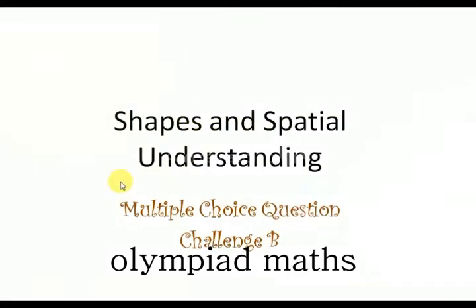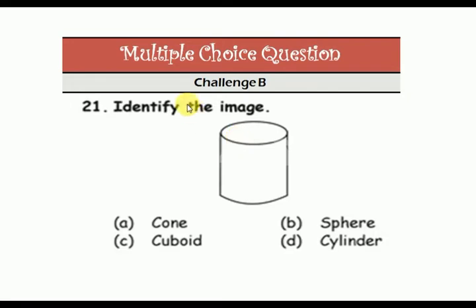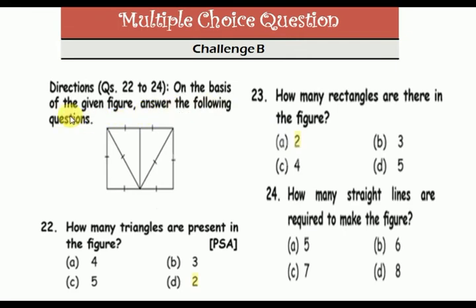Shapes and spatial understanding multiple choice question challenge B. First, identify the image: cone, cuboid, sphere, cylinder. This is a cylinder. Next question is direction 20.